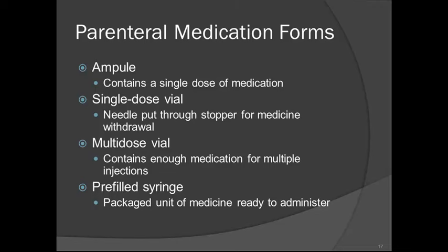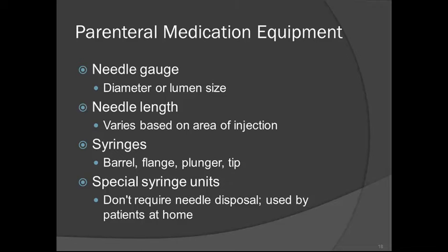Parenteral medication forms: an ampoule contains a single dose of medication — we rarely see these in the clinic anymore since they are glass and pose a hazard to employees. A single-dose vial requires a needle to be put through the stopper to withdraw medication. A multi-dose vial contains enough medication for multiple injections, usually about 10 doses. Pre-filled syringes or cartridges are packaged units ready to administer. Needle gauge is the diameter of the lumen: common gauges for intramuscular injections are 21–23; for subcutaneous, 25–27; and for intradermal, 27–28.